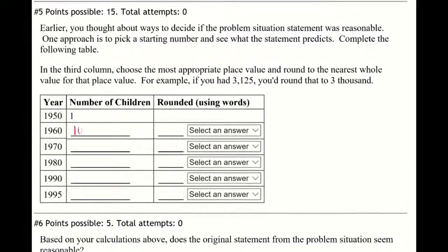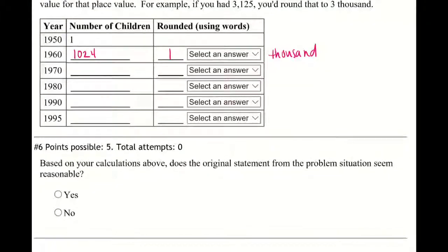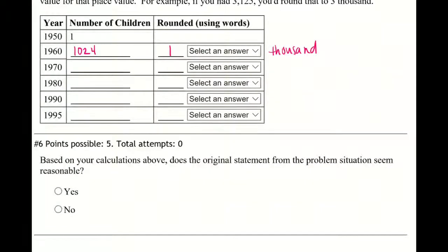For number five, we're going to keep going, so we'll start with the 1024 we just found. But now we have to round using words, so we're going to have to remember our place value. This will be one thousand because the zero, right, it's less than five, I round down.